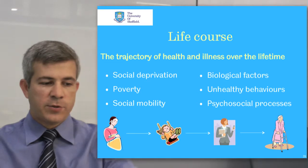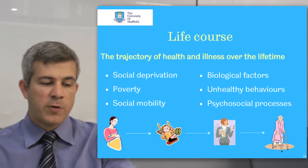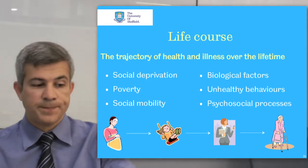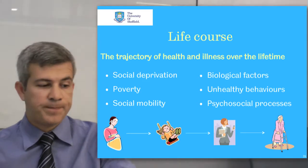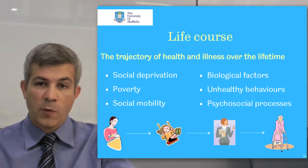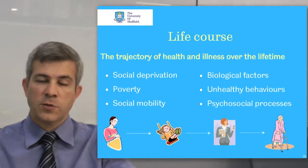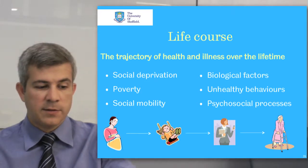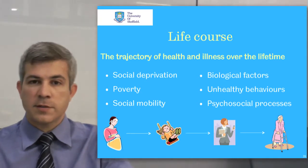The aim of studying the trajectory of health and illness over lifetimes is to elucidate the role of social inequality, as well as biological, behavioral, and psychosocial processes that operate along the individual's life course or across generations to influence the development of disease risk. A life course approach does not deny the importance of conventional risk factors.